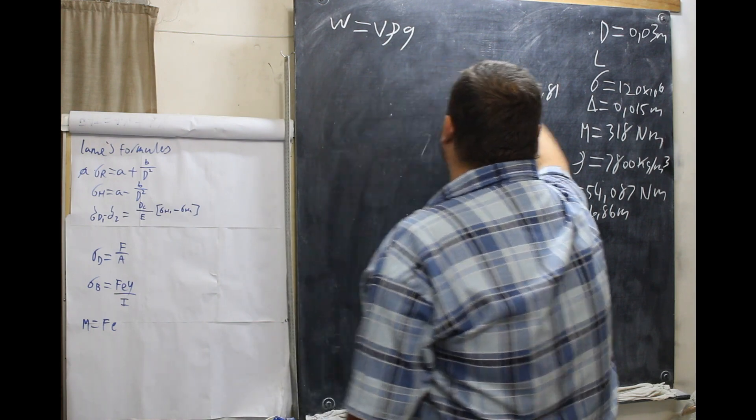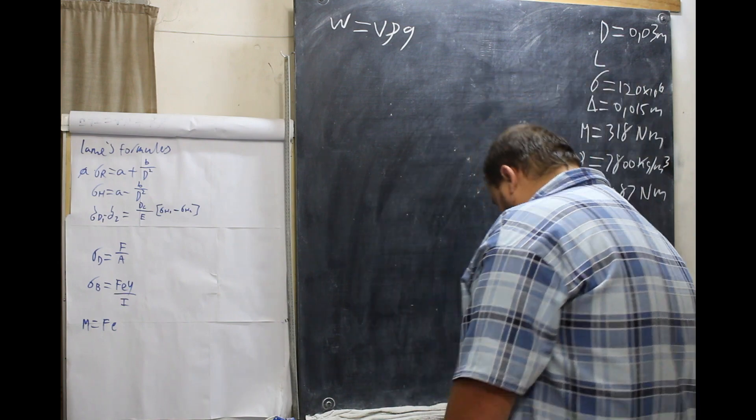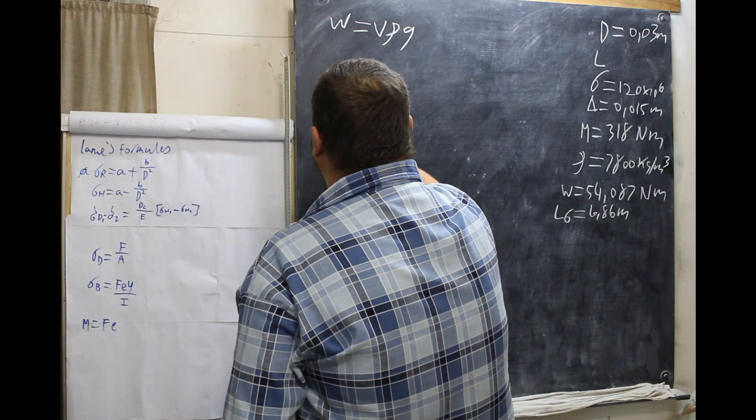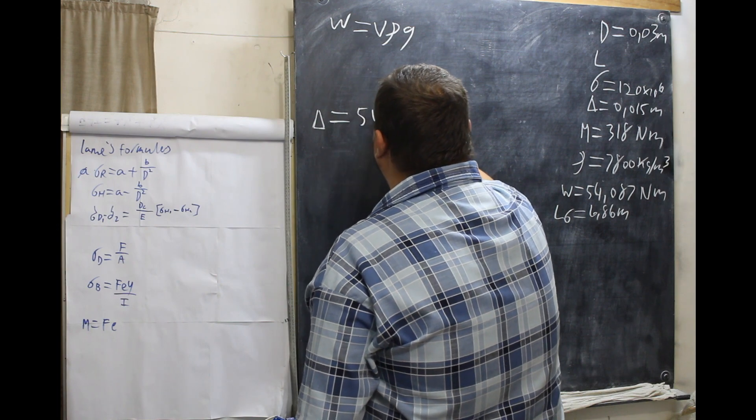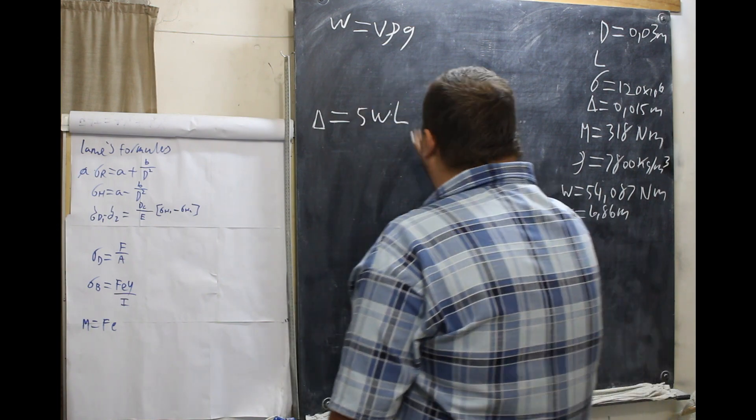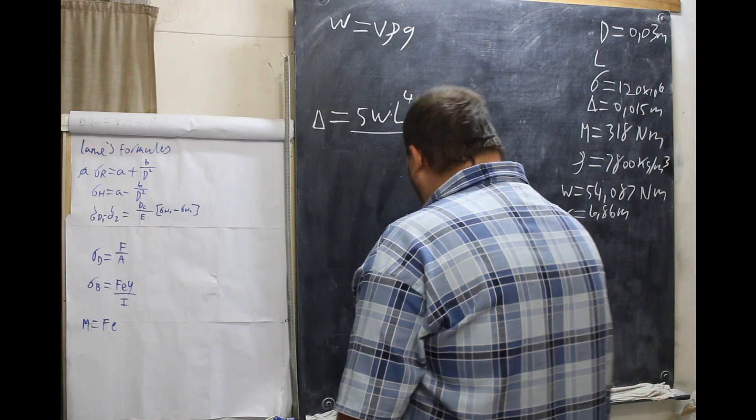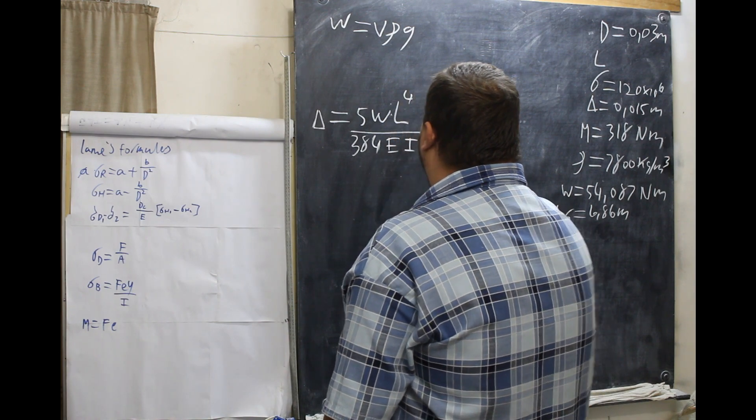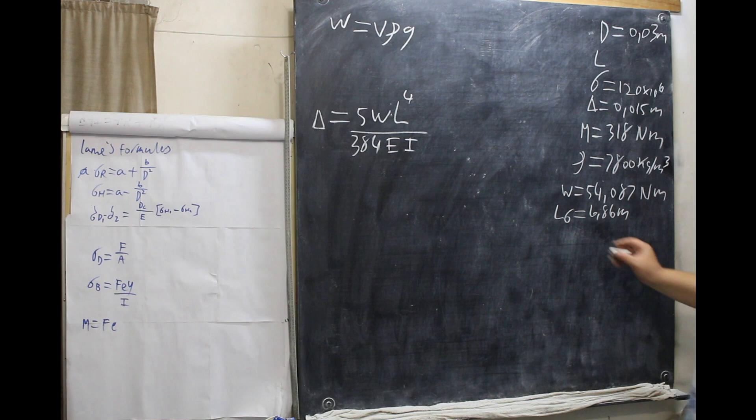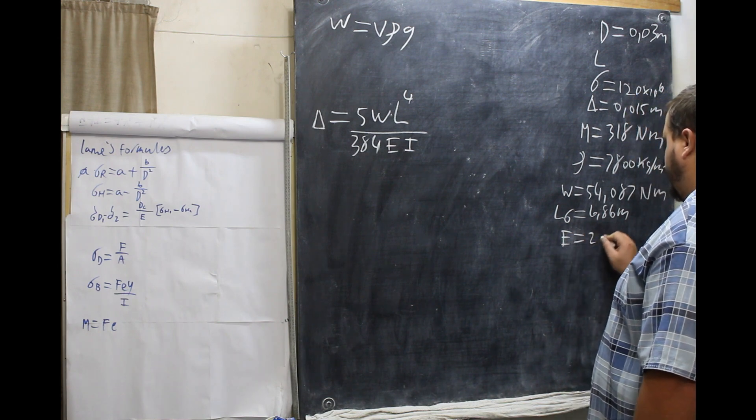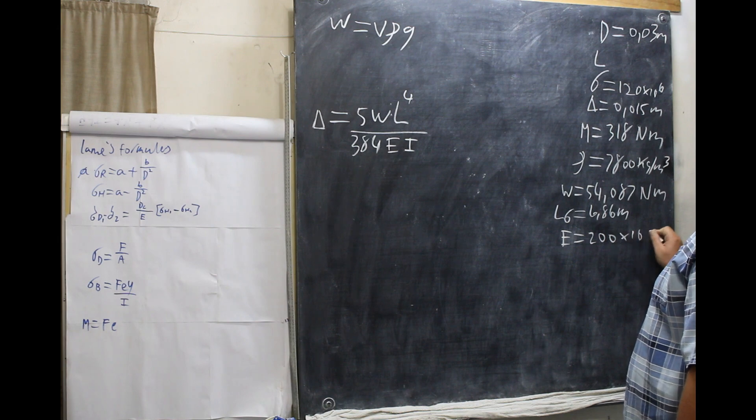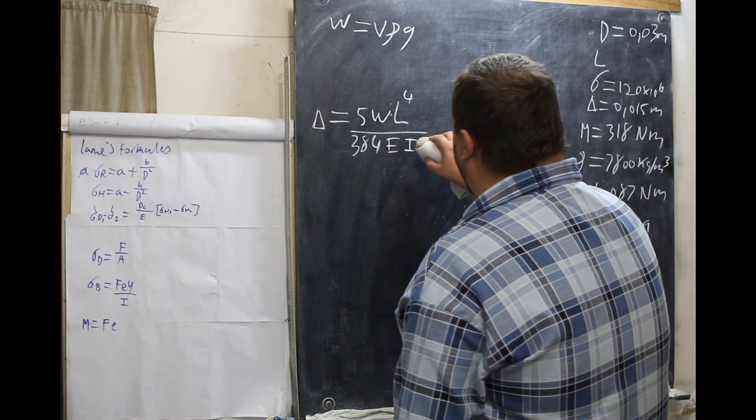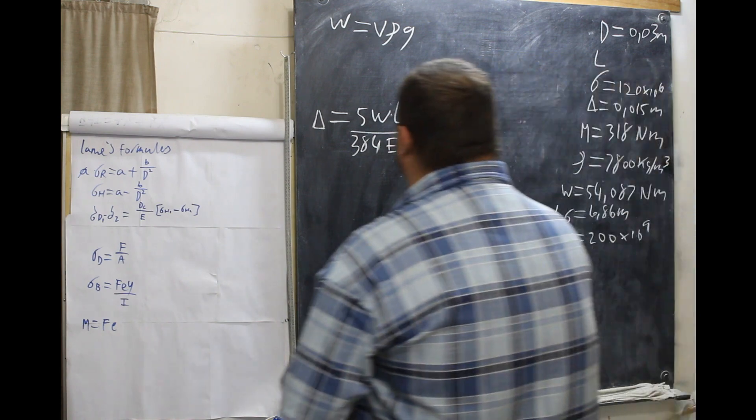And that formula is deflection is equal to 5 W L to the power of 4, all over 384 E I. E, as we know, equals 200 times 10 to the 9. Now, what we're going to do, we can just leave I out. But that is the formula because there is no I in this calculation.